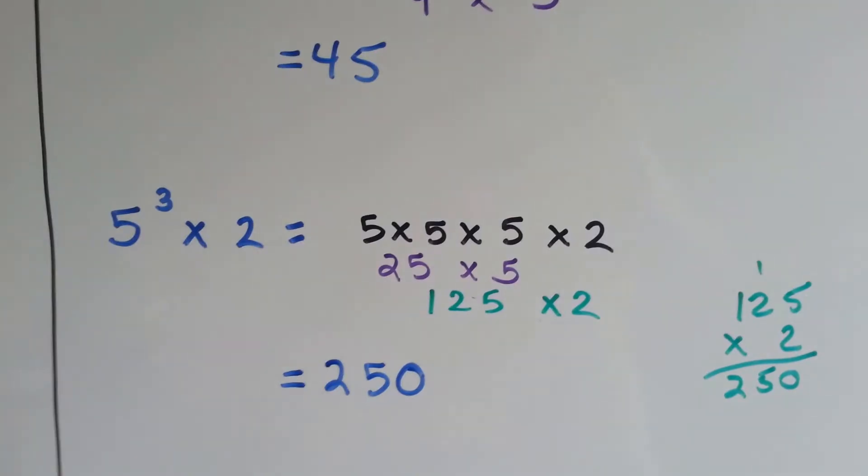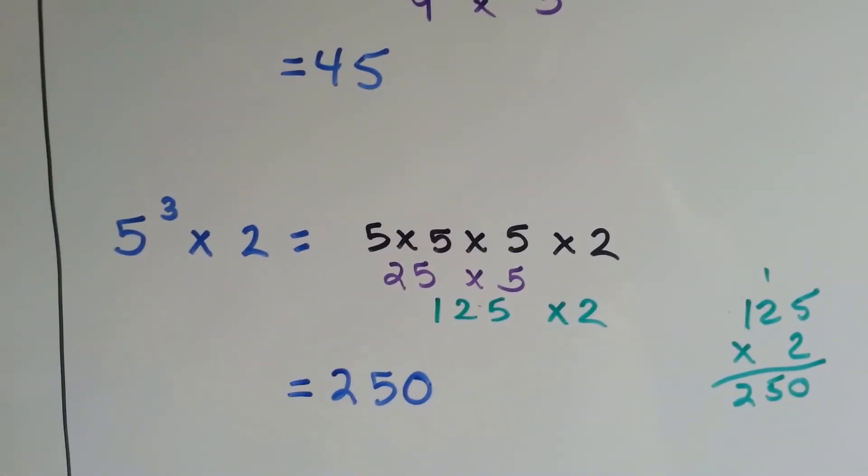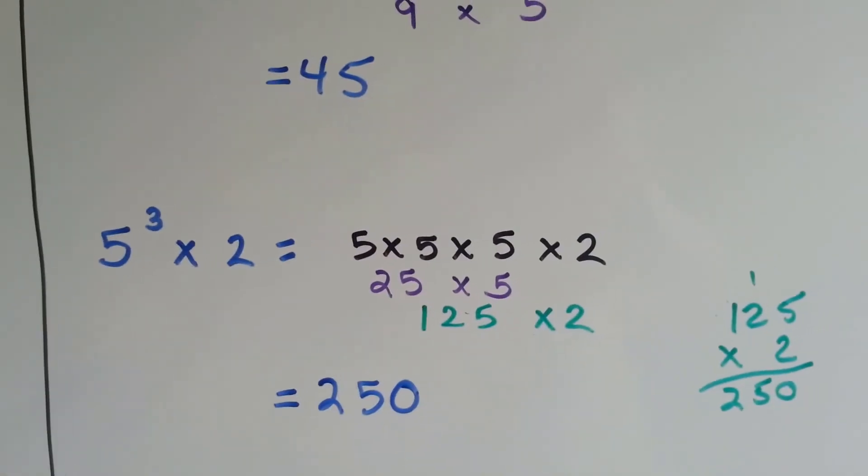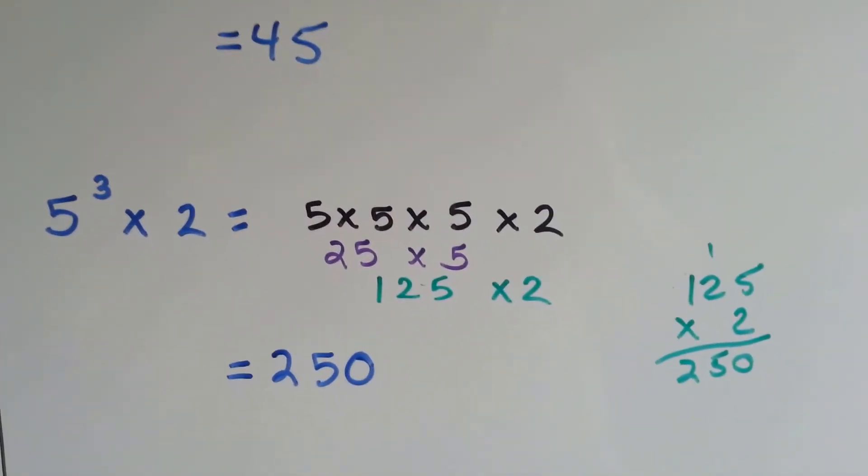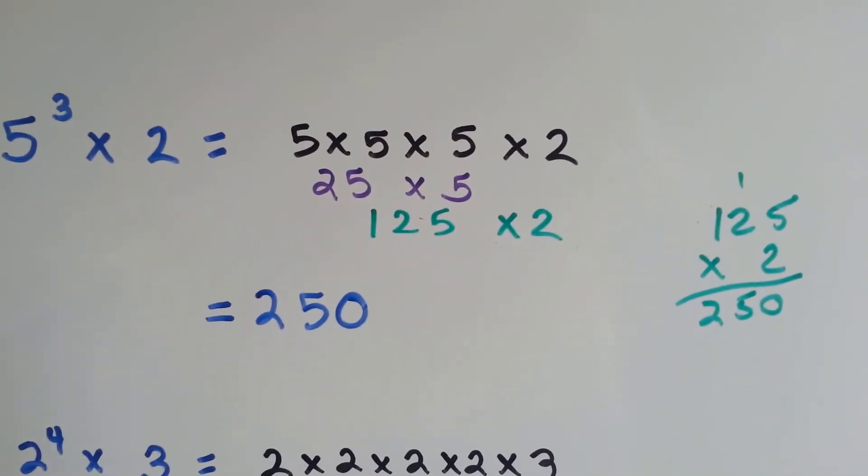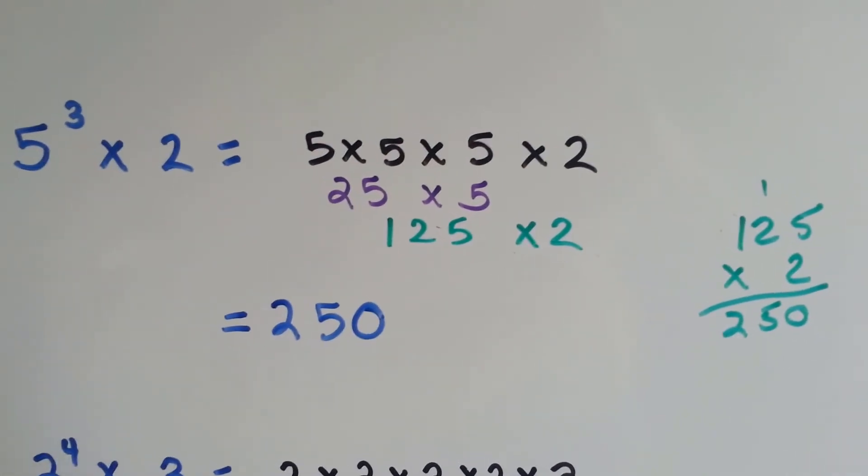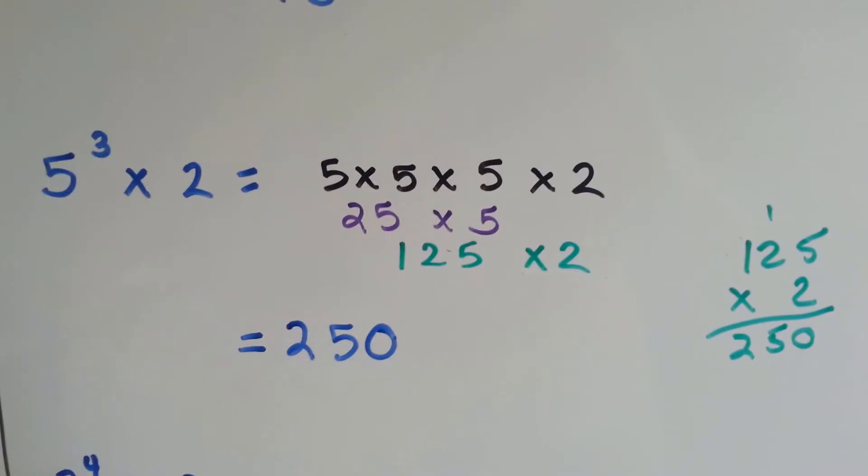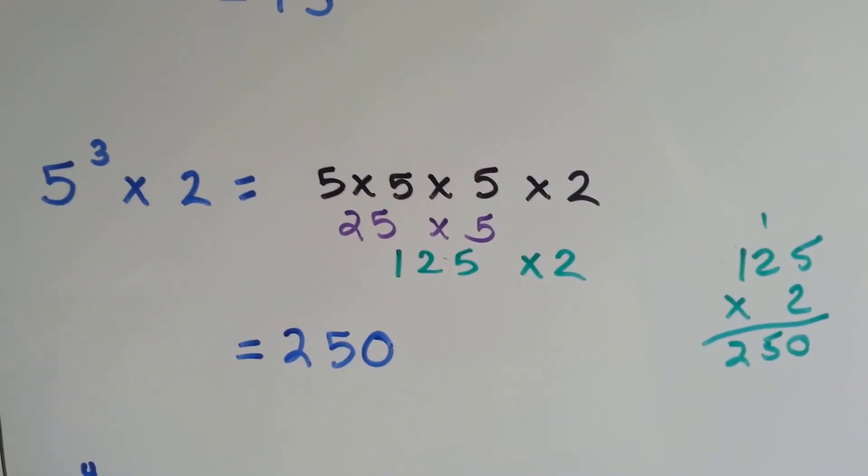For this one, we have 5 times 5 times 5, because it's 5 to the third power, that means 3 fives. We multiply the 5 times 5 and get 25, and we have to multiply that by 5 and we get 125, and then we multiply that by the 2 and we get 250. So 5 to the third power times 2 is 250.